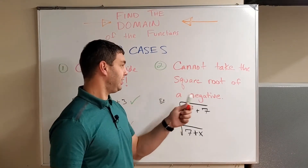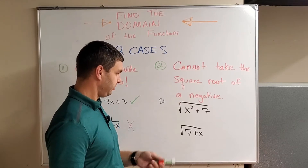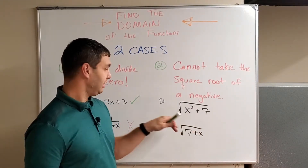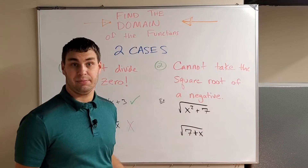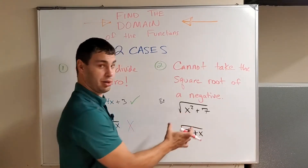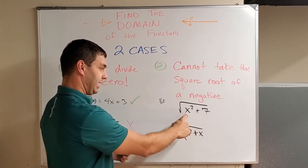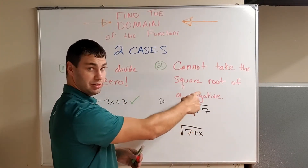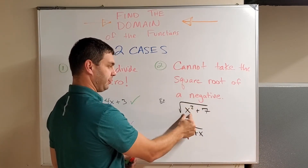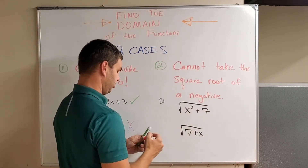Our second case: you cannot take the square root of a negative. Some more examples here. If I have the square root of x² + 7, this is okay. There's nothing I can plug in for x that's going to give me a negative radicand — the part inside your square root. If I plug in a negative and square it, plug in zero and square it, or even a positive and square it, it's always going to give me something positive. And when I add seven, it's going to be that much more positive, so this actually works out.